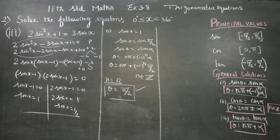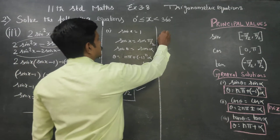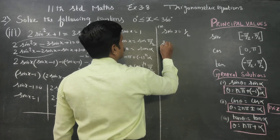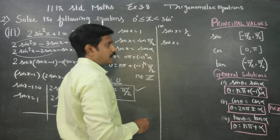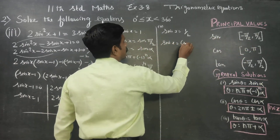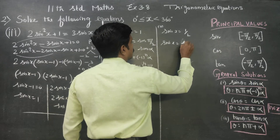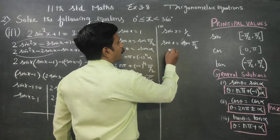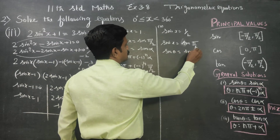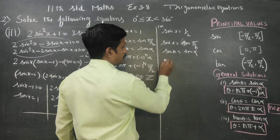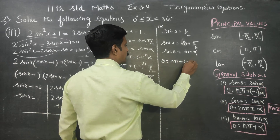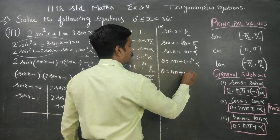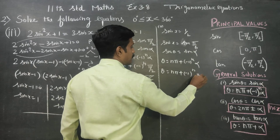Now for sinx = 1/2. Sin 30° = 1/2, and 30° = π/6. So α = π/6. Applying the general solution: sinθ = sinα gives θ = nπ + (-1)ⁿ × α, where α = π/6.